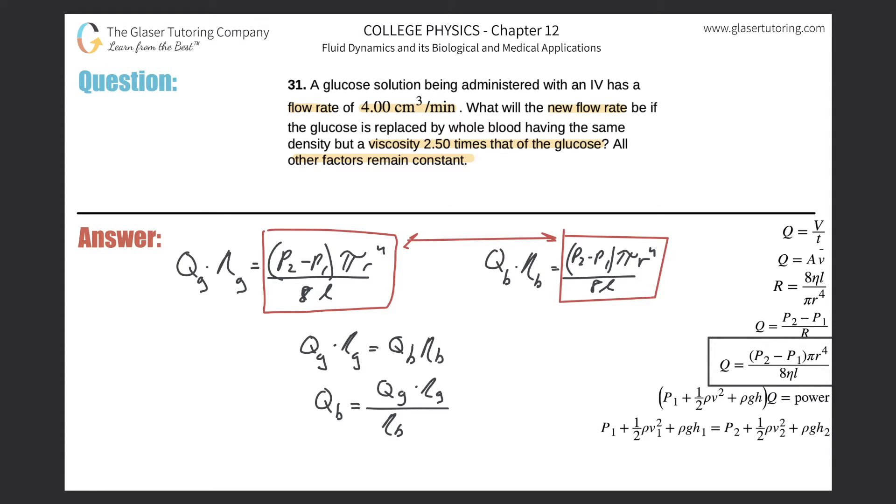So now we don't know either of these values but somehow they're going to have to cancel. So take this last sentence. It says that the whole blood will have a viscosity 2.5 times that of glucose. So what exactly does that mean? It's telling us that the viscosity, that's eta.